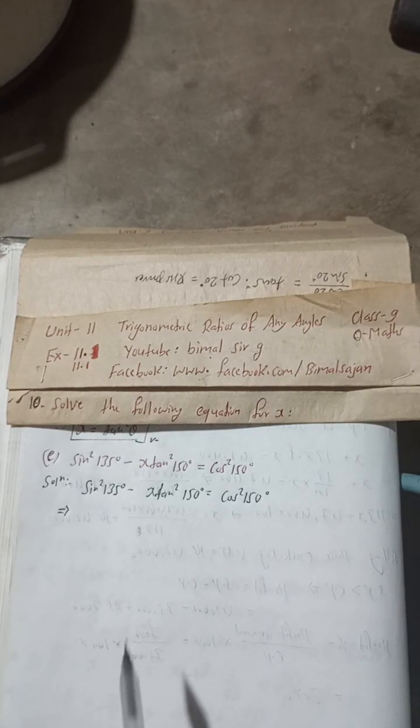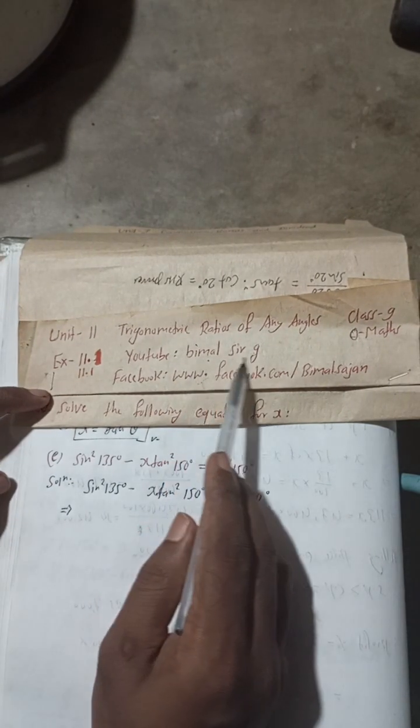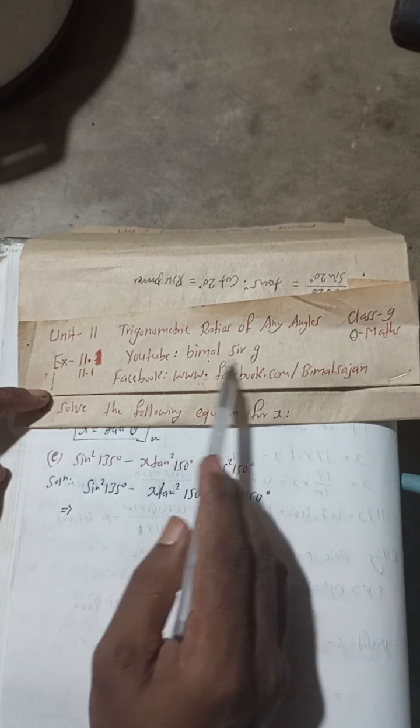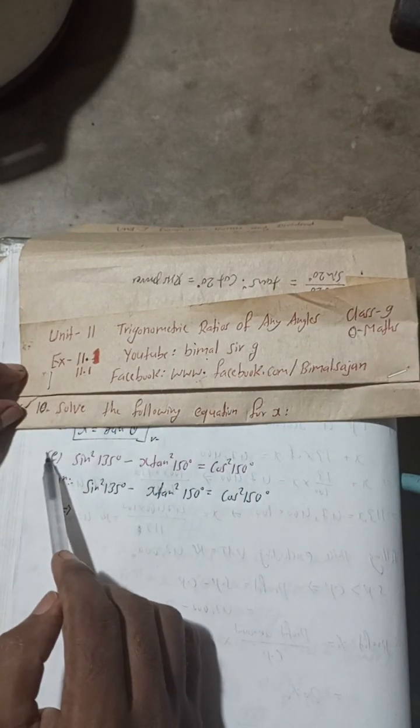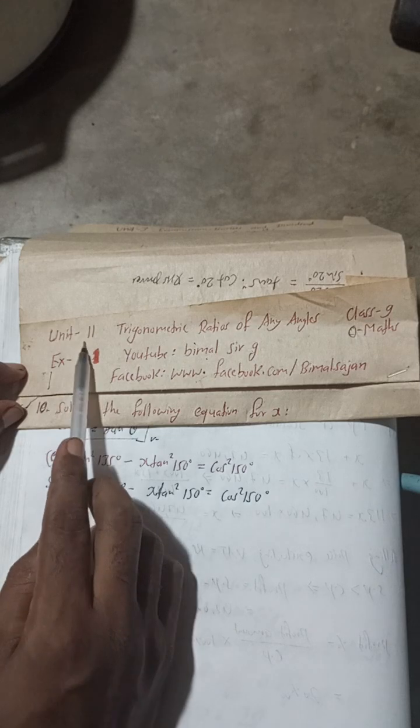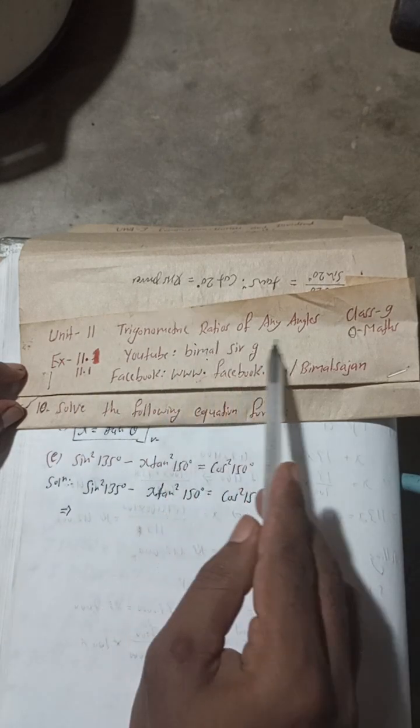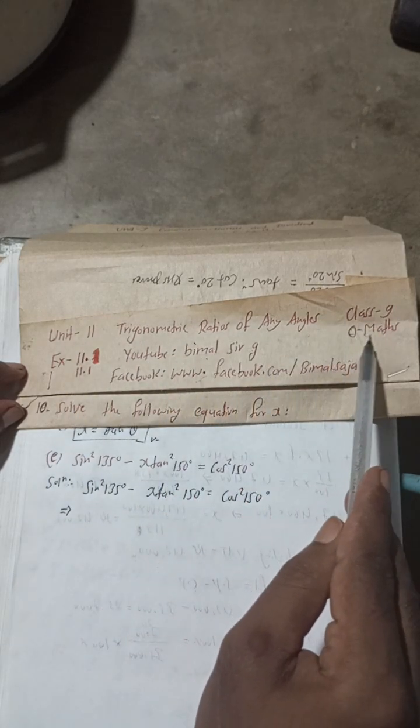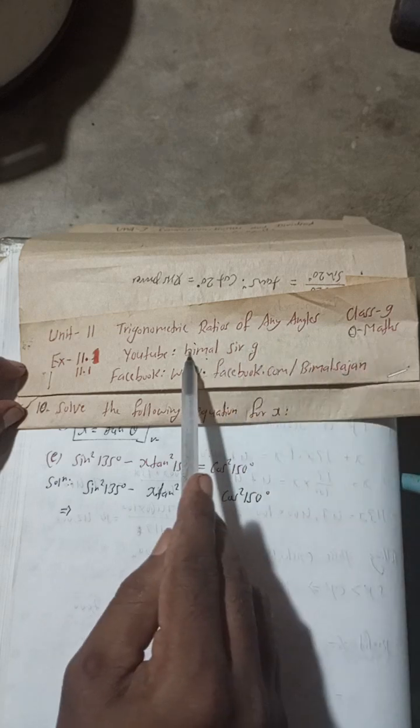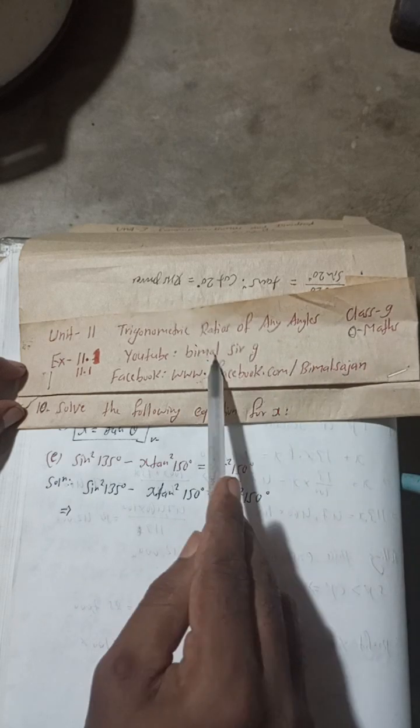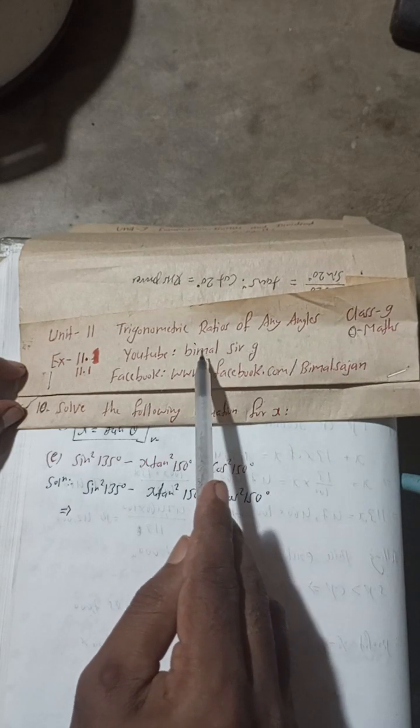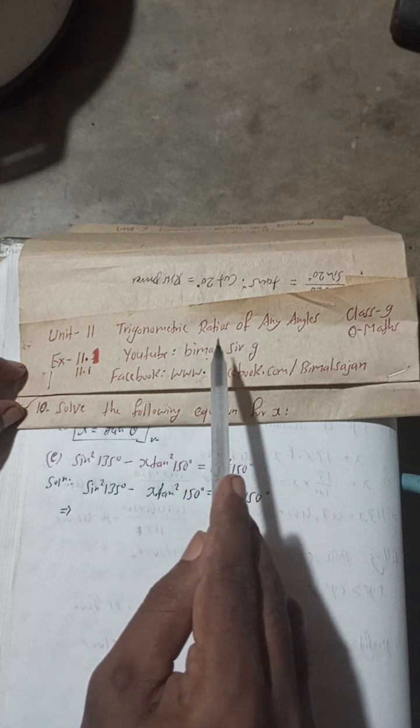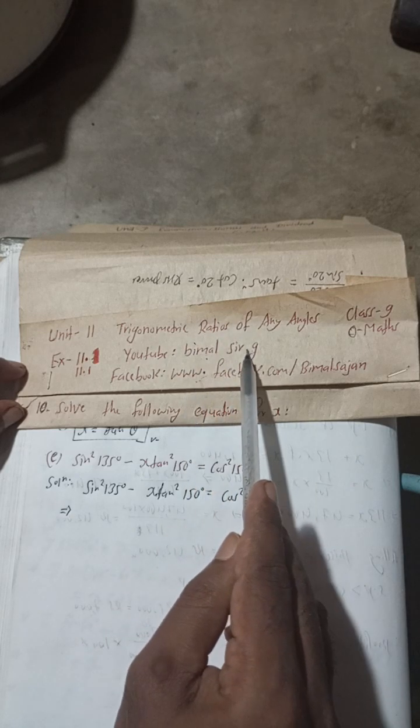Radhe Radhe, Jai Sri Krishna. Class 9 and 10 students, welcome back to Bimal Sarji YouTube channel. This is question number 10e, Exercise 11.1, Unit 11: Trigonometric Ratios of Any Angles, Class 9 Optional Mathematics. If you check the playlist of Bimal Sarji YouTube channel, then you will get Class 9 and 10 Optional Mathematics, Compulsory Mathematics.